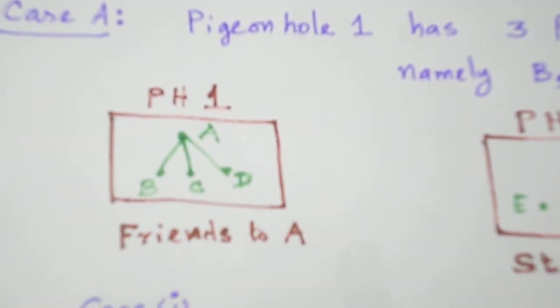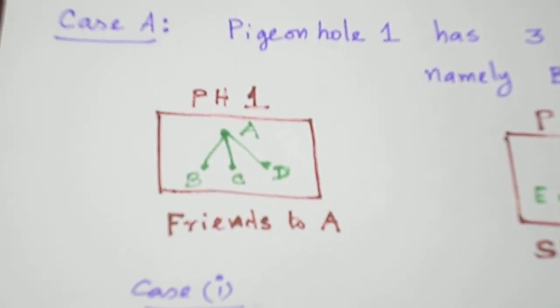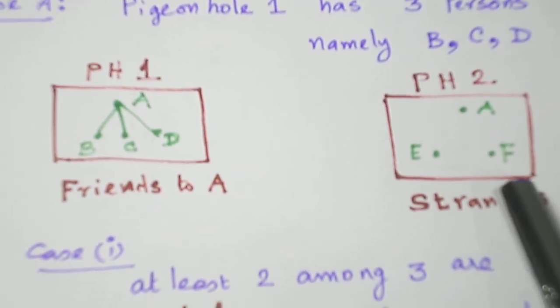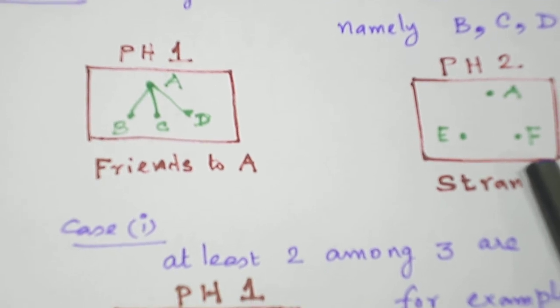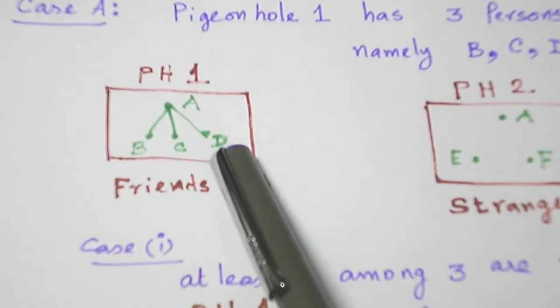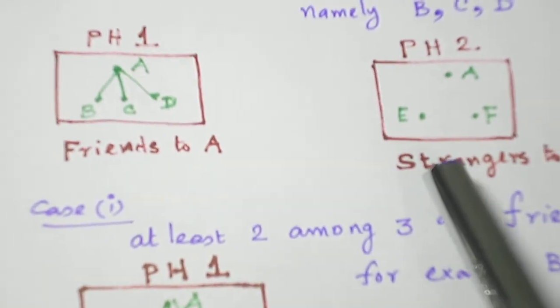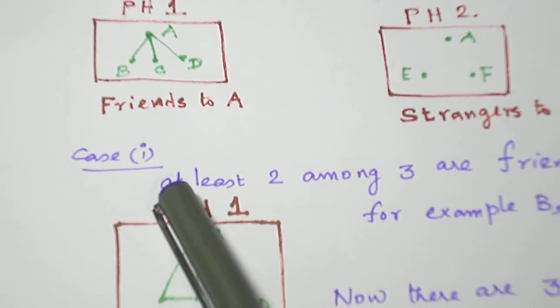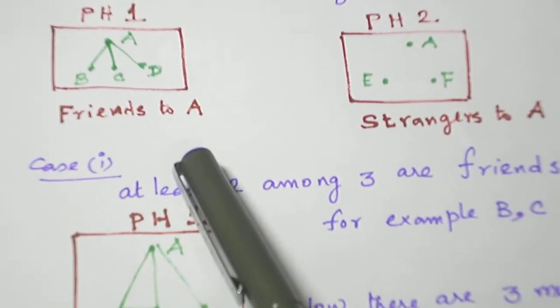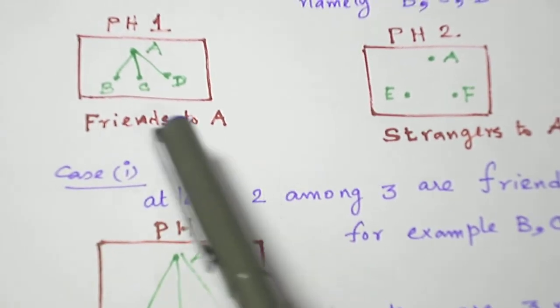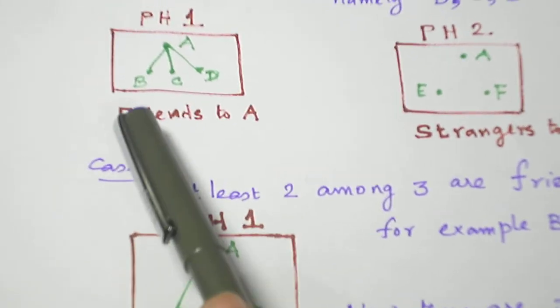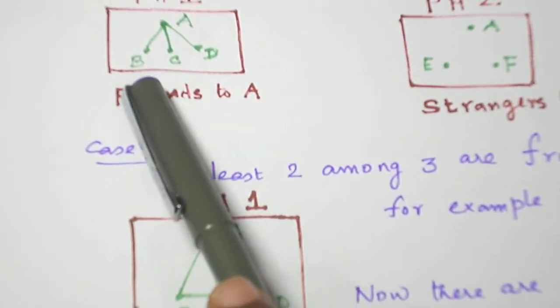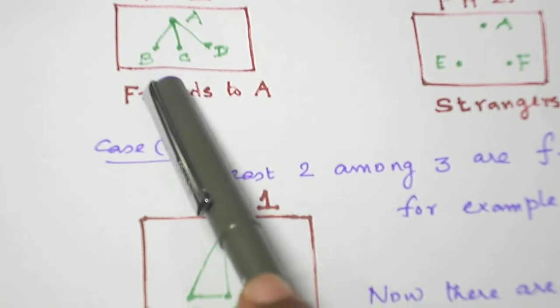Now I take 2 cases. Pigeonhole 1 contains 3 persons and Pigeonhole 2 contains 2 persons. I name them as B, C, D in Pigeonhole 1, E, F in Pigeonhole 2. Now the first case, in Pigeonhole 1, I have taken 3 persons B, C, D. Now I assume all the 3, at least 2 persons are mutual friends to each of them.